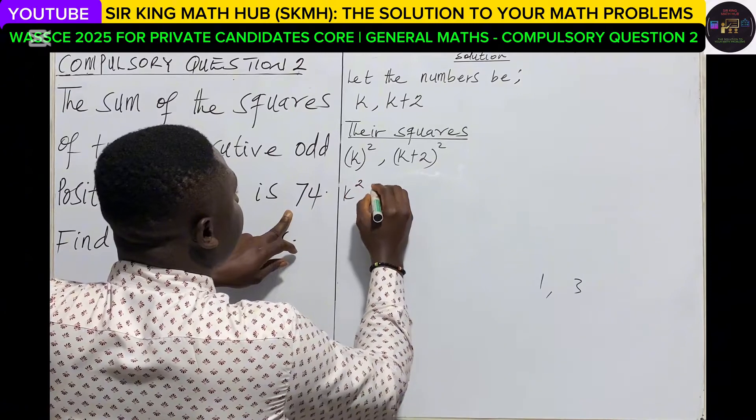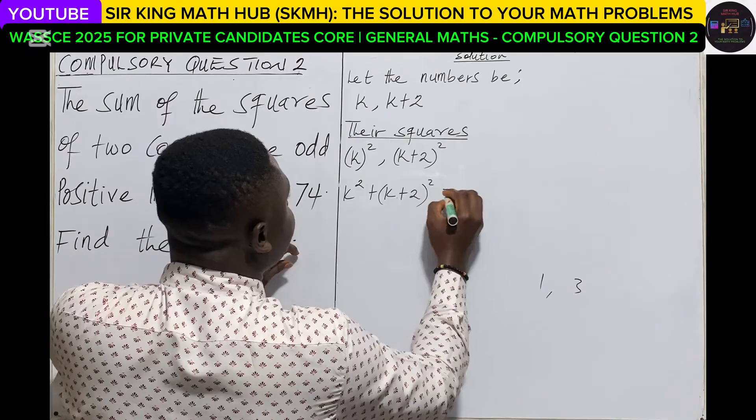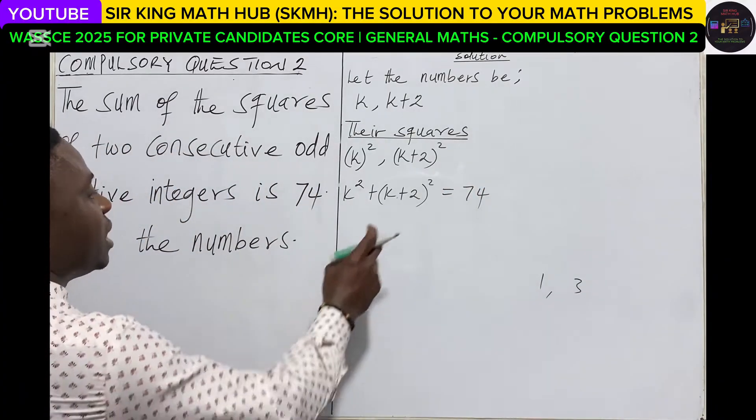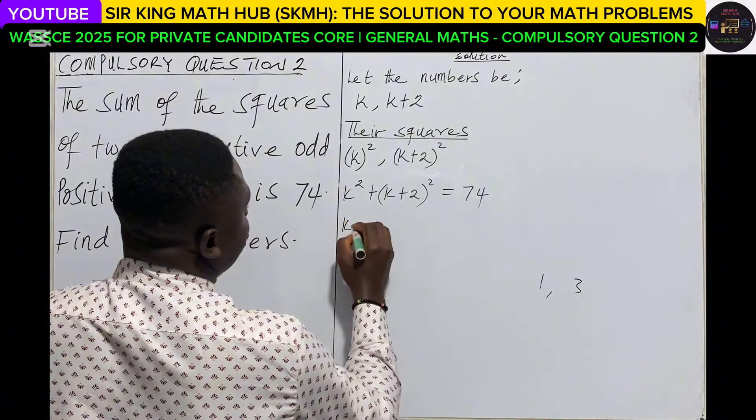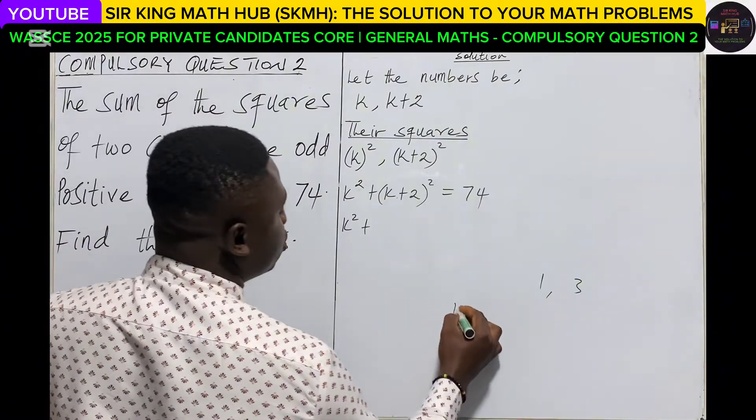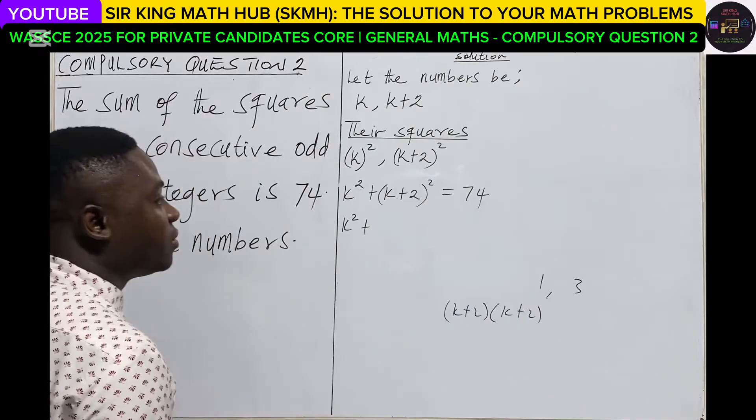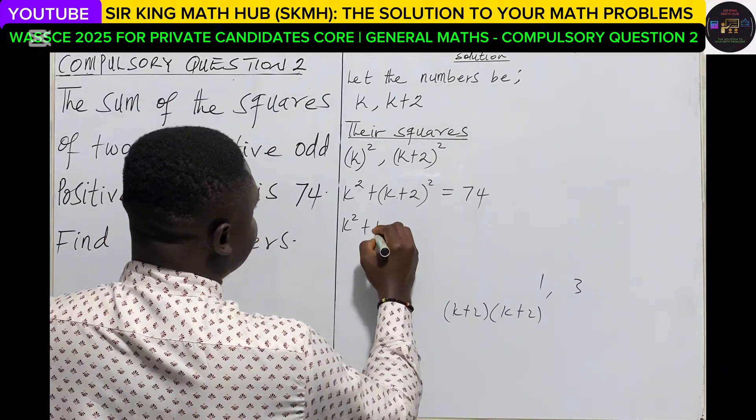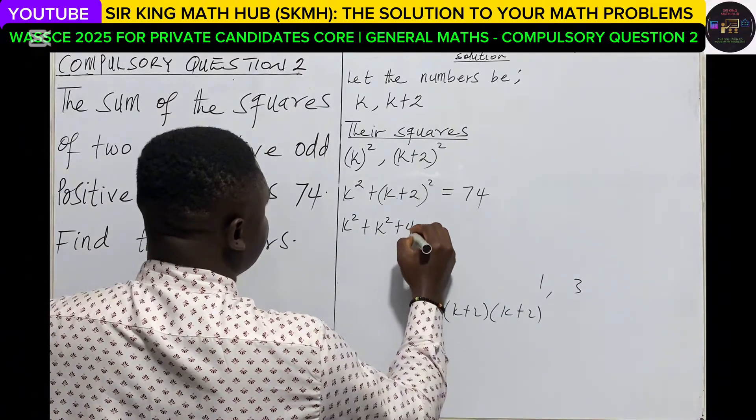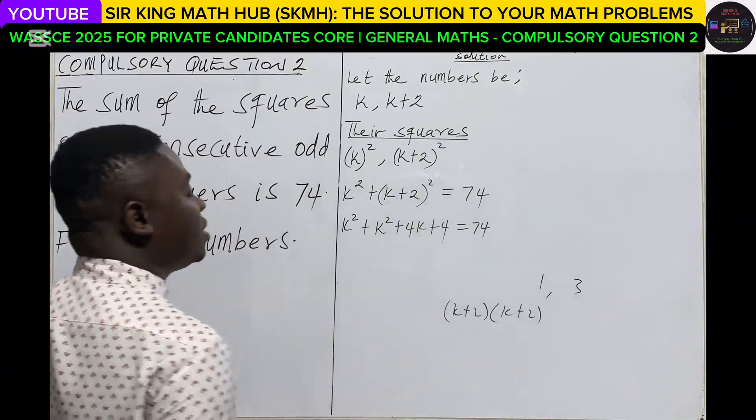So k squared plus k plus 2 all squared must equal 74. So let's expand the second term. We have k squared plus, now k plus 2 all squared is the same as k plus 2 multiplying itself. So when we expand this you end up getting k squared plus 4k plus 4 and this must be equal to 74.